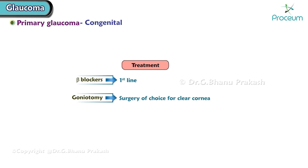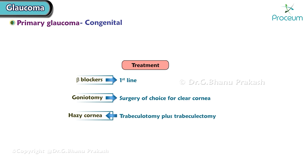Goniotomy is the surgery of choice for clear cornea. Other options for hazy cornea are trabeculotomy plus trabeculectomy.